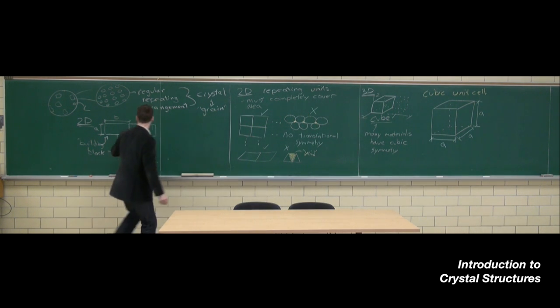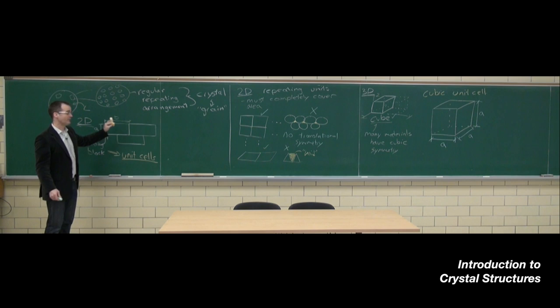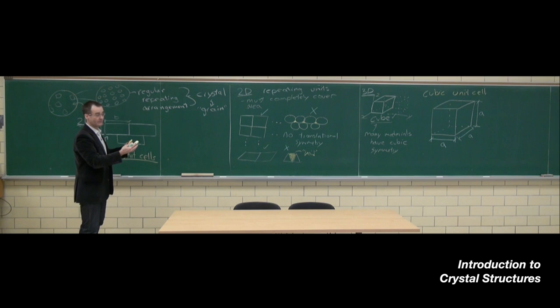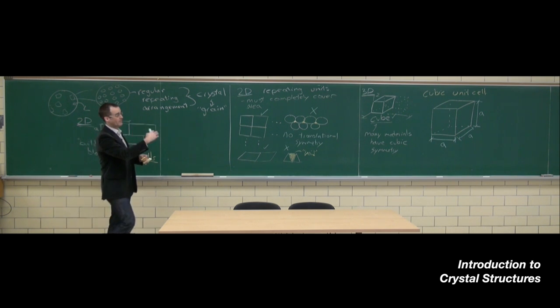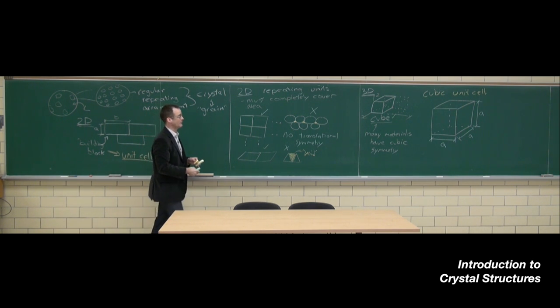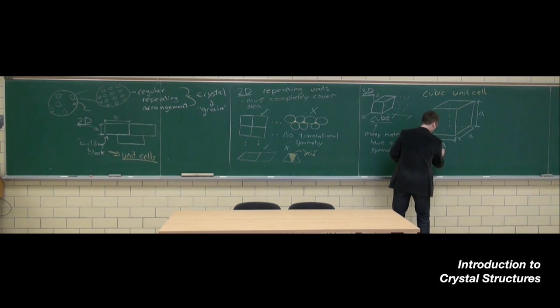Over here I went ahead and described another dimension b for this rectangular two-dimensional shape. Similarly, in some three-dimensional unit cells we'll have the height, for example. If this was tetragonal, like a cube that's elongated a little bit, we would have a height that was different than the base dimension, so we'd have a value of a and b that we have to define. What we call those are the lattice parameters.